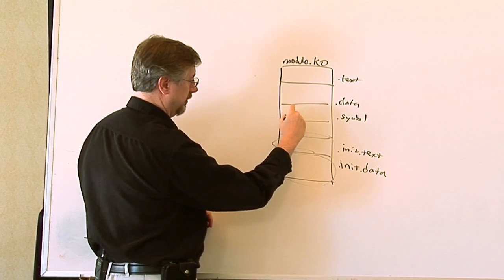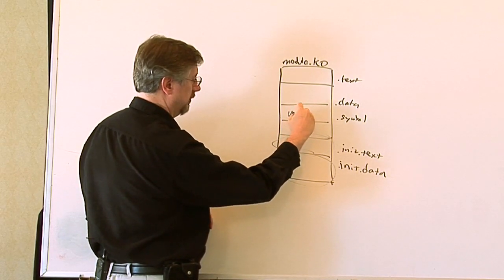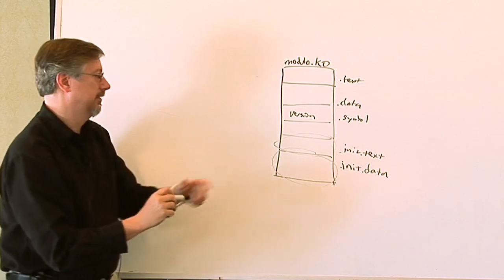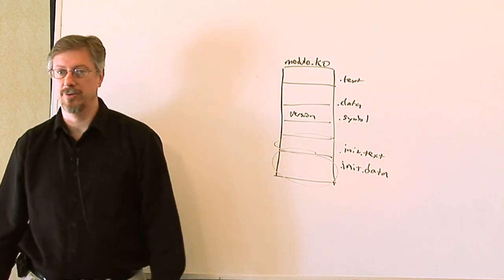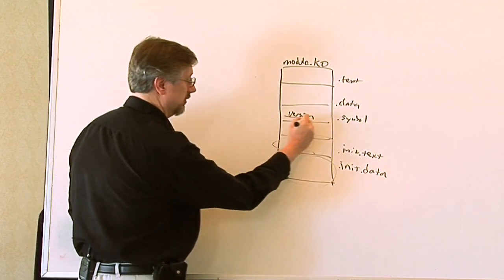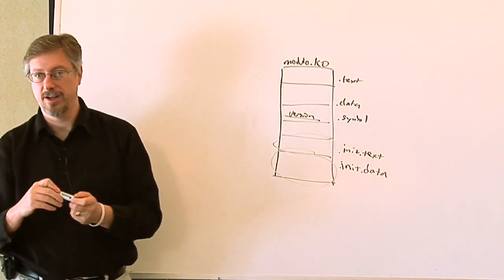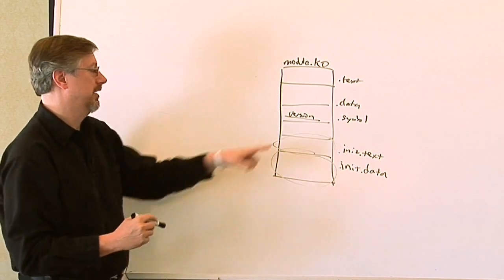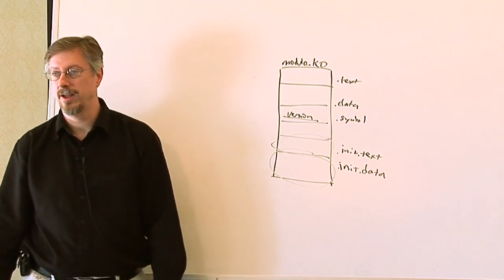Maybe this one is called version. And so maybe a symbol in there doesn't have, it's not resolved, it doesn't have an address for it. And so then it'll notice that this one needs this symbol to be resolved. And it'll go looking for another module. And maybe the other module has version in it as a symbol, and it's exported.